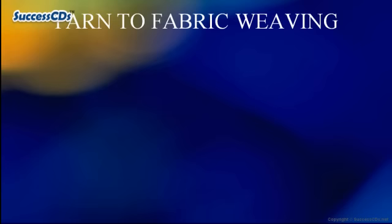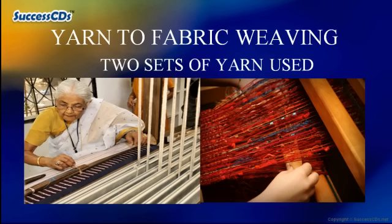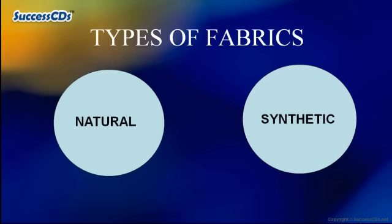Once they are made into yarns, they are either woven into a fabric with the help of two sets of yarns — for example, a saree — or knitted with the help of one set of yarns — for example, a pair of socks. The fabric which is ready with the help of yarns can be grouped into natural and synthetic.